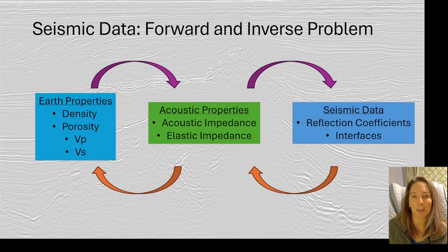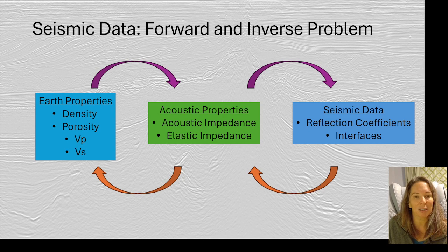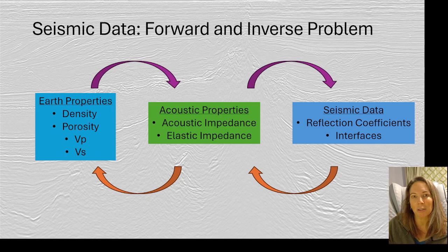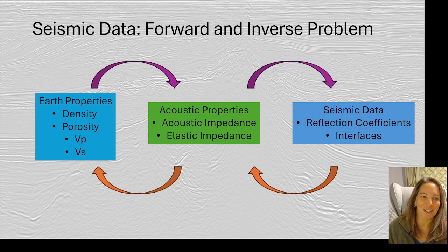Let's start by looking at the big picture of seismic data and how it relates to what's in the ground. Think about it as a loop where we start with basic earth properties like density, porosity, and the velocities Vp and Vs. Those give us the acoustic properties — the acoustic impedance — and from that we can calculate the seismic data. Now we're going to work this problem in reverse, going from the seismic data backwards to the acoustic properties. That's the forward problem in purple and the inverse problem in orange.